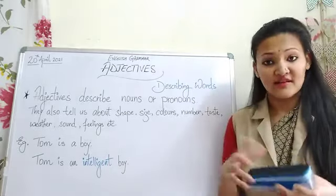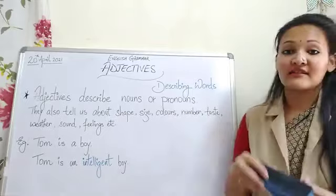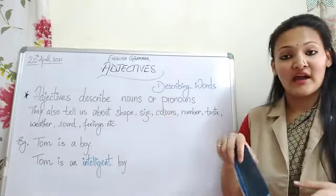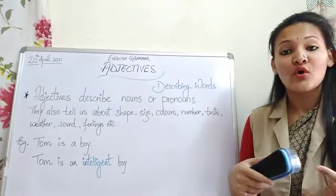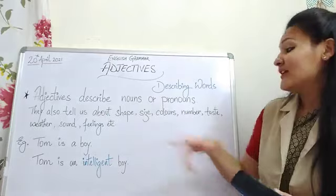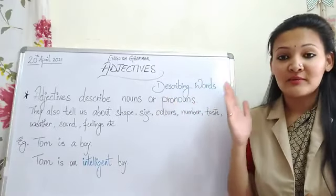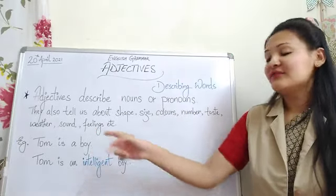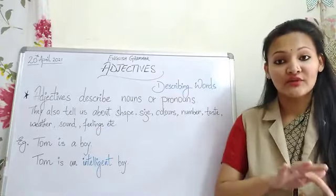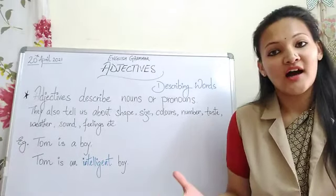For example, let's take a duster. Shape: it is rectangular. Size: it is small. Thickness: it is thick. Colors: blue, black, white. Number: only one duster here. Taste is not applicable — we cannot taste a duster. Weather is also not applicable. Sound: if I bang it on the table in a classroom, it will make a loud sound and it will not be pleasant to the ears. Feelings: it is a non-living thing, but if you bang it on your hand, you will get hurt — you have feelings. This is how it works — whatever words we use to describe something are adjectives.